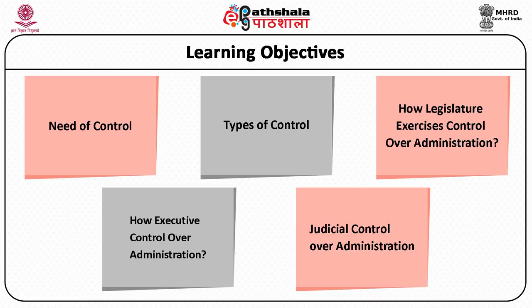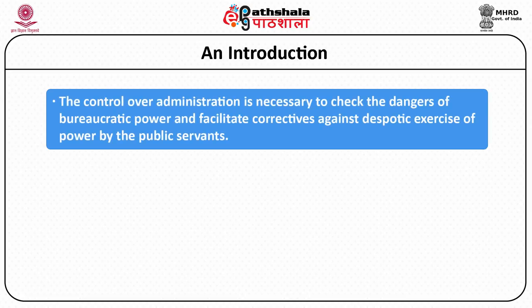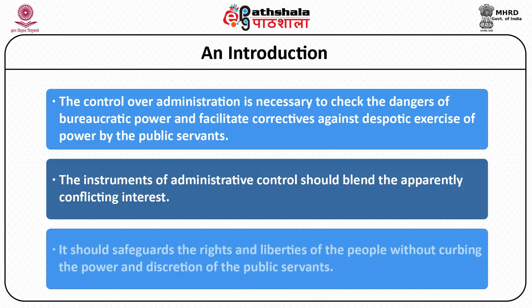To begin with, we will look at the need for control over administration. Control over administration is necessary to check against the despotic exercise of power by the bureaucrat. The instrument of such control should blend apparently conflicting interests — protecting the rights and civil liberties of individuals without curbing the power and discretion given to bureaucrats.